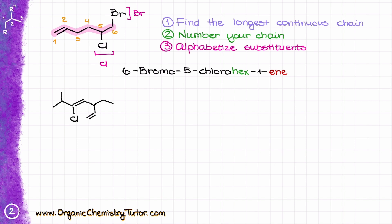For the next example, step one: I need to find the longest continuous chain containing as many double bonds as possible. I have to go around to the other double bond to make sure I include both double bonds in the count. Then I number my molecule to give the lowest possible numbers to my double bonds — starting from one end gives me 1, 2, 3, 4, 5, 6, and 7.